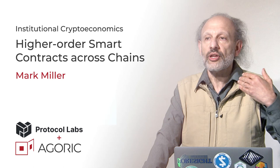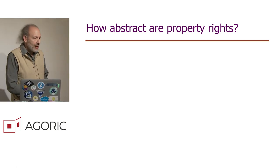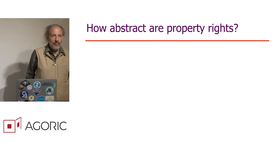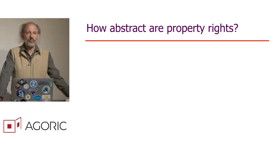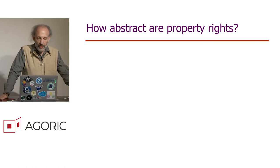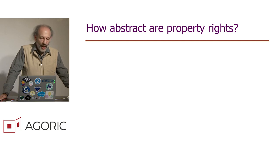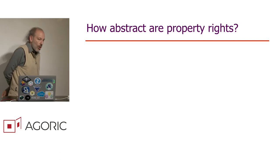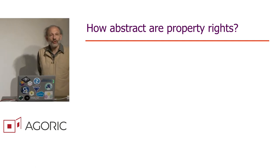I'm Mark Miller, and I'll be speaking today about higher order smart contracts across chains. The world economy, the phenomenon of markets that has evolved in human society for thousands of years, is a very rich, complex phenomenon that has given rise to all sorts of ways that humans cooperate with each other in large networks. And the current way that we're building smart contracts is not able to reproduce that richness. I want to focus on one particular source of that richness that we can understand and try to do a better job to reproduce.